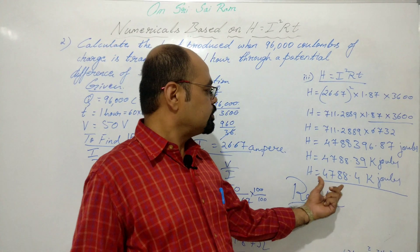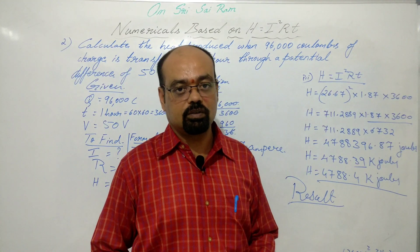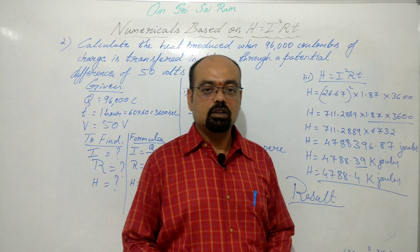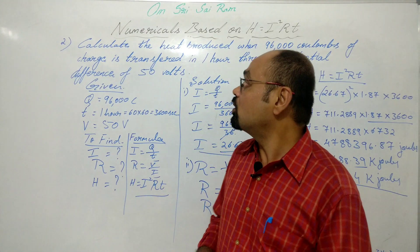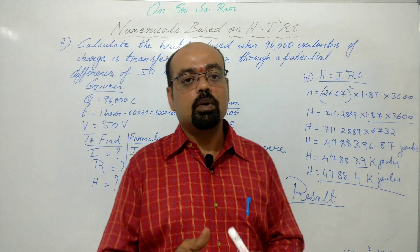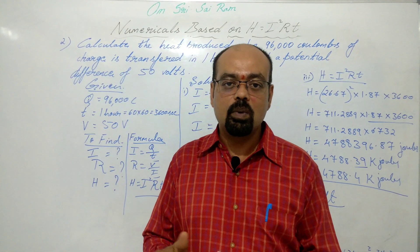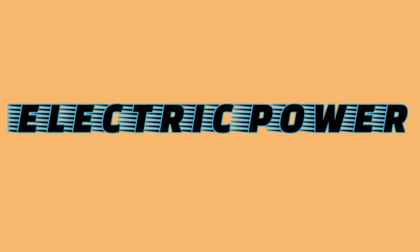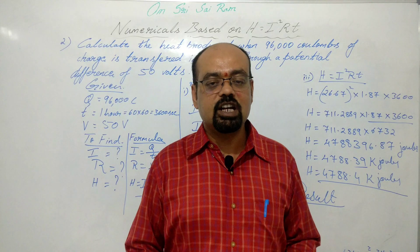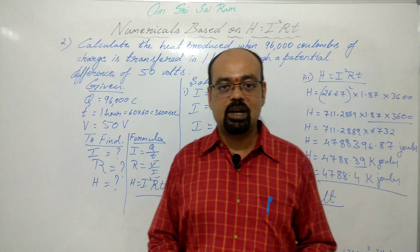Result: heat produced = 4788.4 kilojoules. This is how we end the topic on Joule's law of heating effect. Please practice these numericals. Next class we will discuss electric power and the commercial unit of electric power. Stay tuned to my channel Govern the Motivator — please subscribe, like, share, and comment. Thank you.